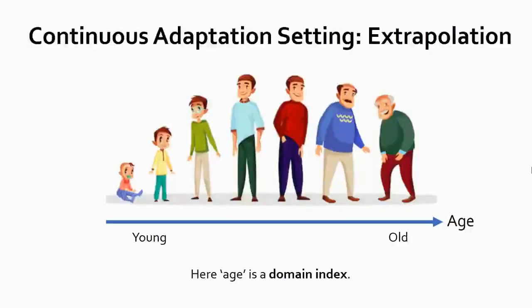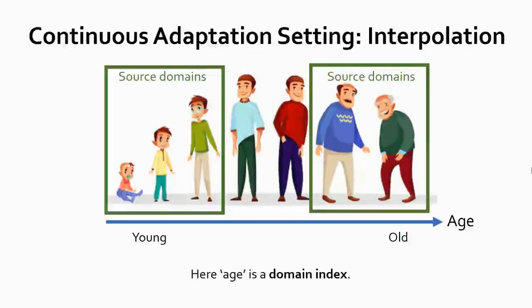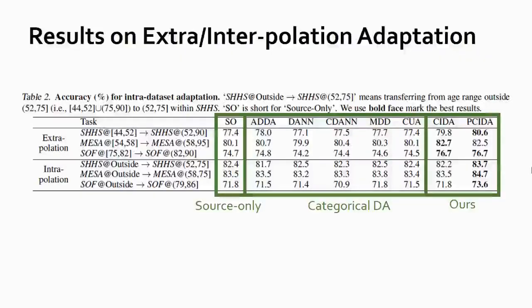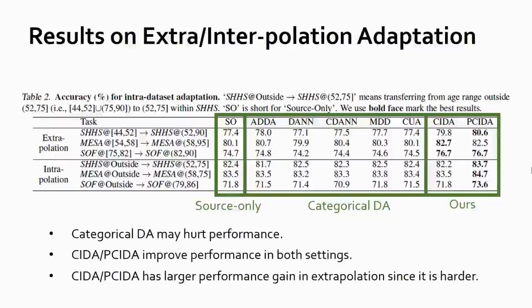We can see the two settings for continuous domain adaptation. One is extrapolation, where we use younger patients as source domains and elder patients as target domains. Another is interpolation, where very young and very old patients are used as source domains and middle-aged patients as target domains. Here we show the results of CIDA and multiple baselines. As we can see, categorical domain adaptation hardly improves and sometimes may even hurt the performance, while CIDA and P-CIDA can improve the performance in both settings. We also note that CIDA has a larger performance gain in the extrapolation setting, since it's more challenging.